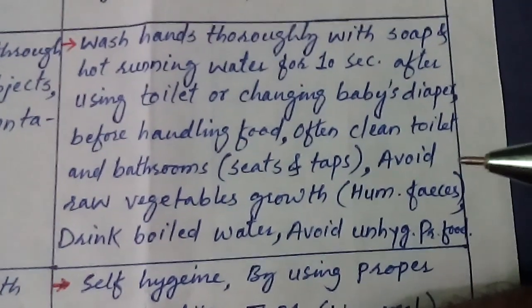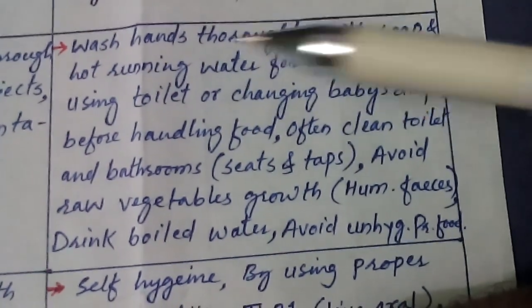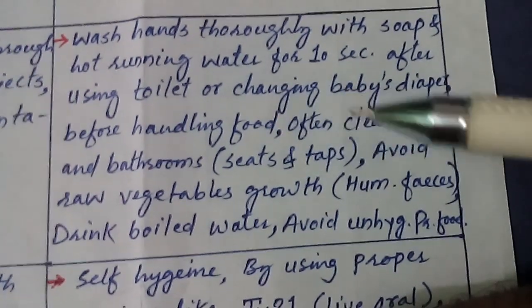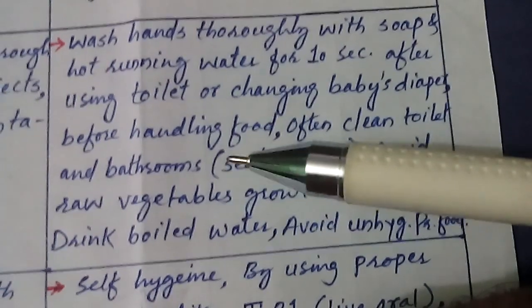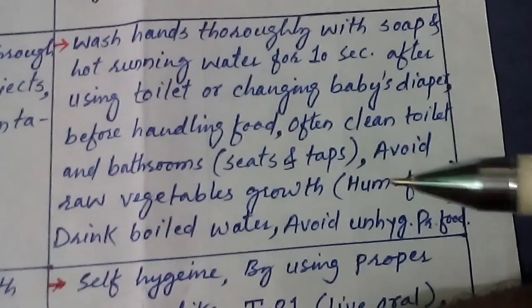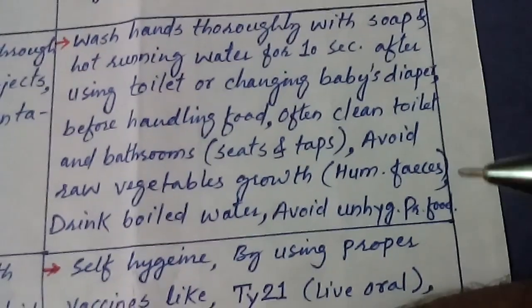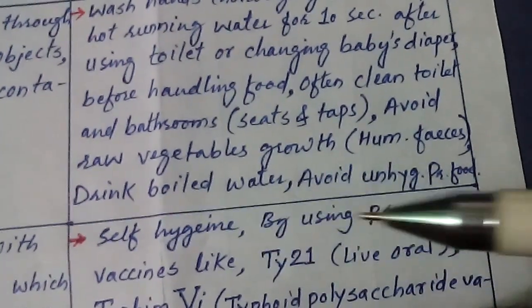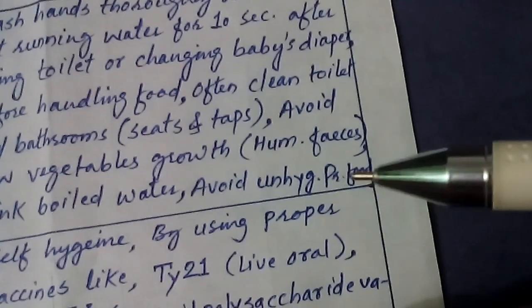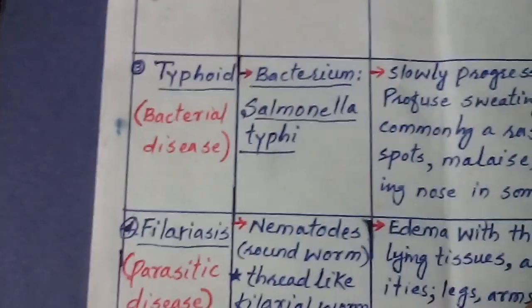Prevention measures for amoebiasis include washing hands thoroughly with soap and hot running water for 10 seconds after using toilets, changing baby diapers, and before handling food. Clean toilets and bathrooms regularly, especially seats and taps. Avoid raw vegetables grown with human feces used as bio-fertilizer. Drink boiled water and avoid unhygienically prepared food. By following these prevention measures, one can escape from this disease.